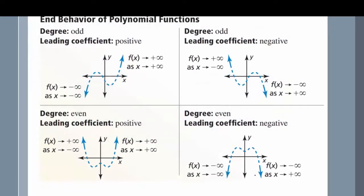Here's what the end behaviors look like graphically. When your exponent is odd and your leading coefficient is positive, we read this as: as x approaches negative infinity, f of x approaches negative infinity, and as x approaches positive infinity, f of x approaches positive infinity.